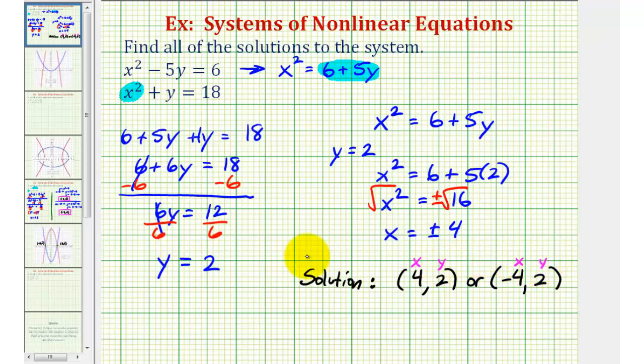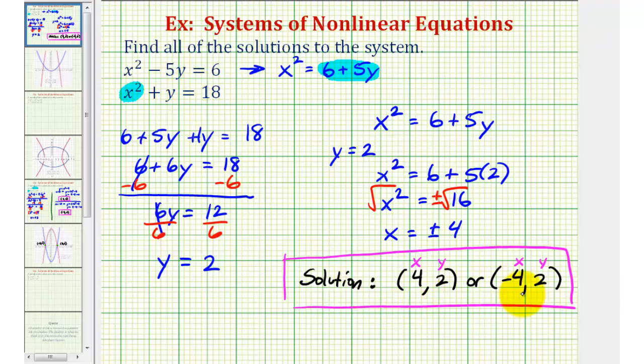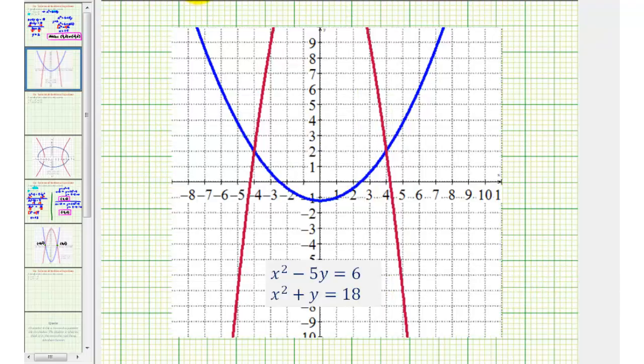Let's check this graphically by graphing both of the original equations on the coordinate plane. These two points should be where the two graphs intersect. Notice how we have two points of intersection, one point here and one point here.